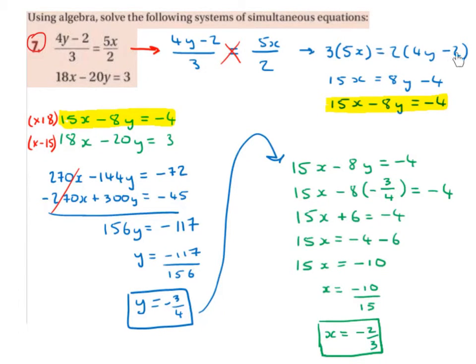So now we multiply out the brackets. 3 by 5x is 15x. 2 by 4y is 8y. 2 by minus 2 is minus 4.